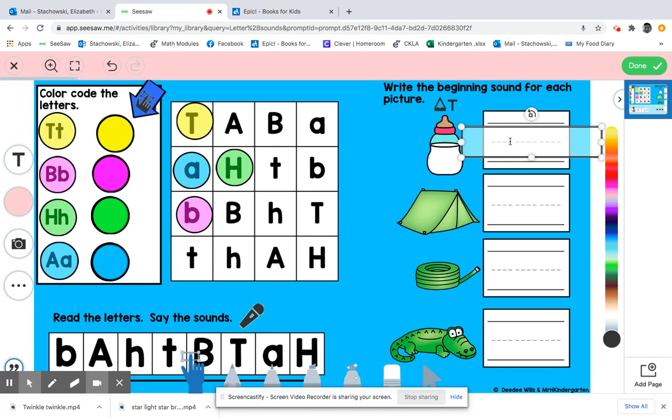and you say to them what does bottles begin with, and they should say B, B, and then you can type it in for them, and then same thing for this one. You're going to do the same stuff down. I hope that helps how to do this page.